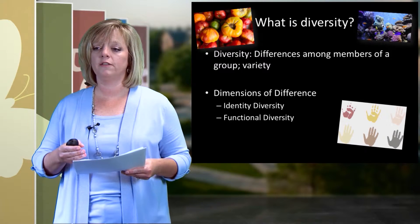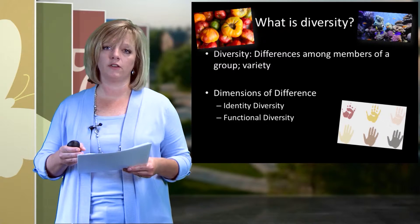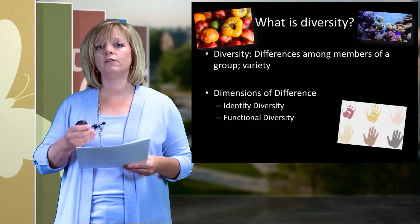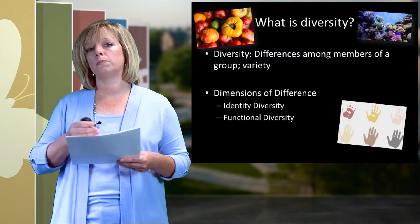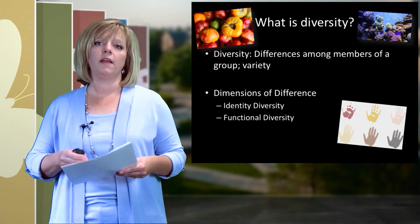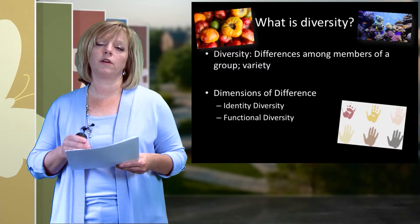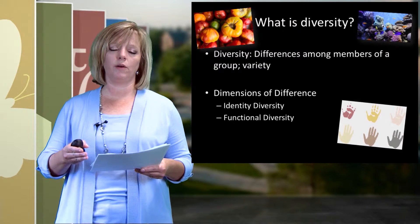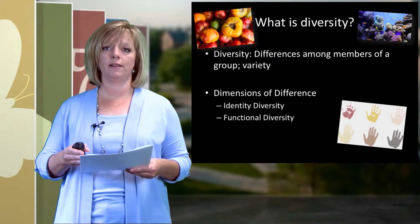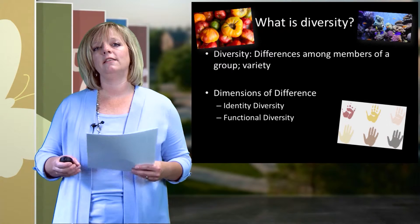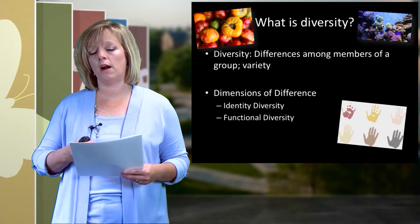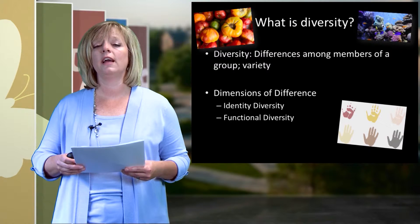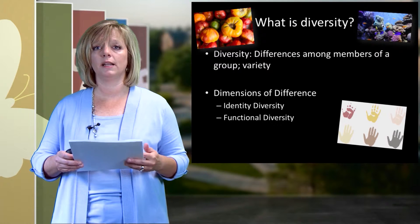The other type of difference that we want to think about is functional diversity. Functional diversity includes things like ways of knowing, how we approach problems, how we solve problems. These are characteristics that are not very easily categorized, and we can't tell what these are going to be for an individual by looking at them. These are the many differences that make us who we are as human beings. We'll explore the relationship between identity diversity and functional diversity a little bit later in this segment.